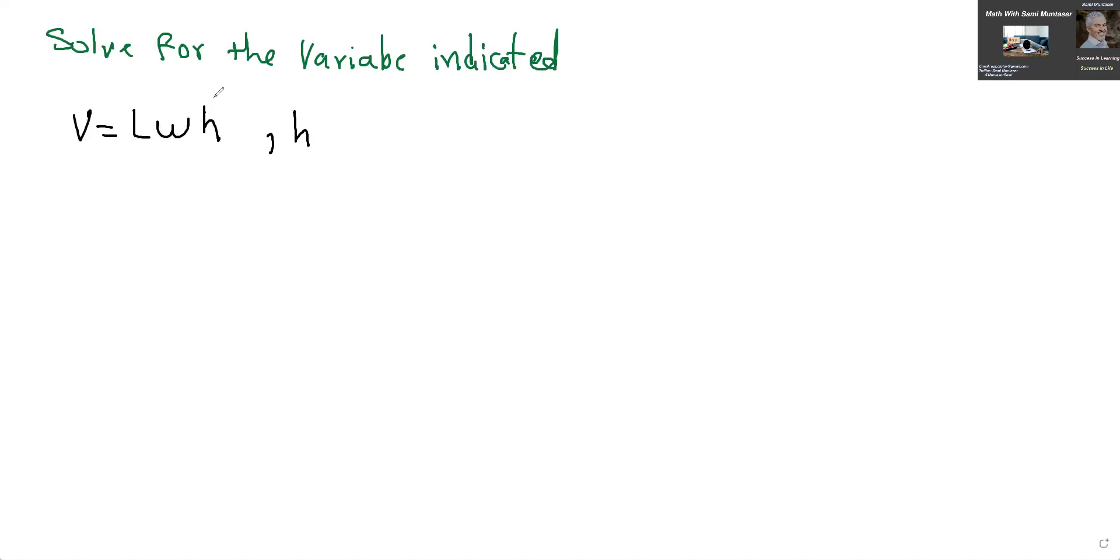This is very simple. If you want to solve this for H, all you need to do is just take this and divide both sides by LW. The Ls will cancel, the Ws will cancel, and then you'll end up with H equals V over LW. So just basic algebra.